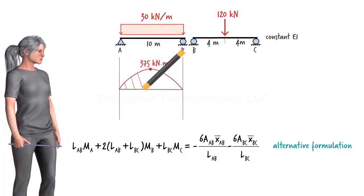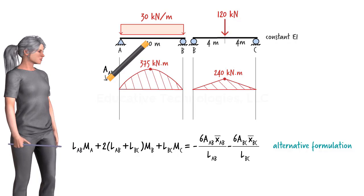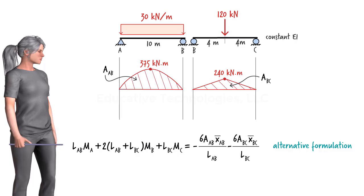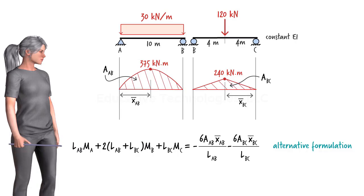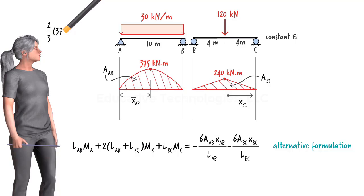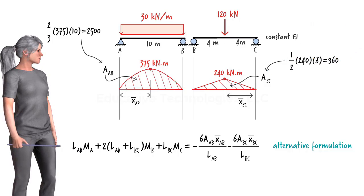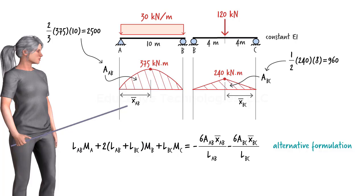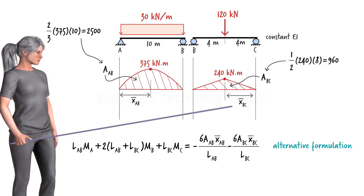More specifically, we start by assuming that each beam segment is simply supported and then draw the moment diagram for the segment. We refer to the area under the diagram for segment AB as AAB, and for segment BC as ABC. We label the distance from the center of the left diagram to point A as X-bar AB, and the distance from the center of the right diagram to point C as X-bar BC. Due to the symmetrical nature of the distributed load, the center of the moment area in segment AB is 5 meters to the right of point A, and the center in segment BC is 4 meters to the left of point C.